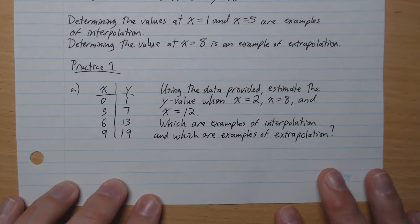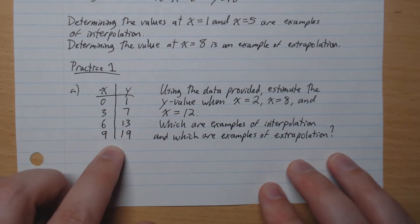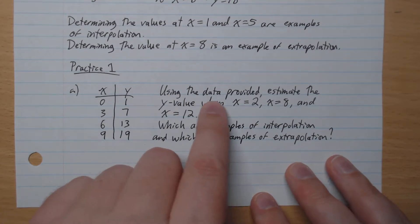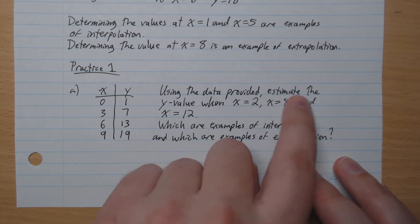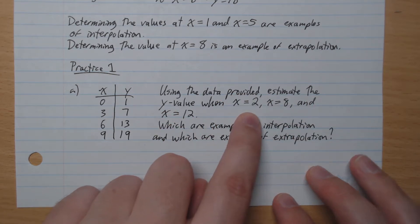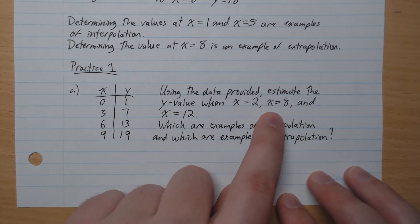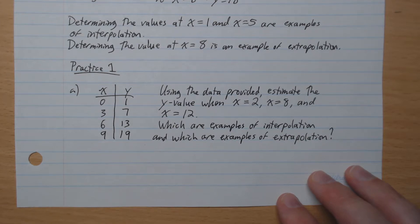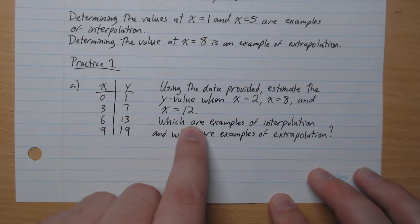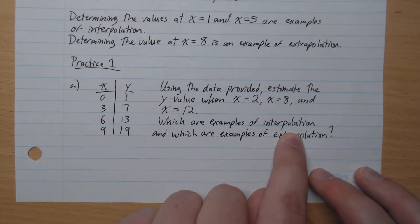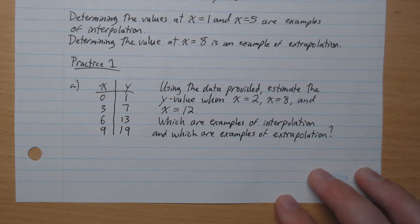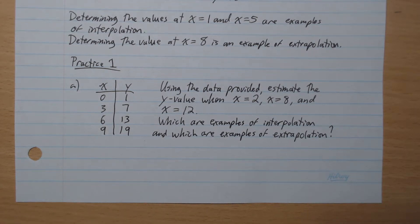Practice number 1. Here we have a table. Using the data provided, estimate the y value when x equals 2, x equals 8, and x equals 12. Also, which are examples of interpolation and which are examples of extrapolation? Go ahead and pause the video and answer that.